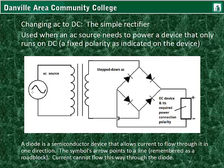This is how a power supply works. You have the AC source — that could be the outlet — it hooks into a transformer. The transformer steps down voltage; it's still alternating current but at a lower voltage. And then a rectifier changes it to DC.